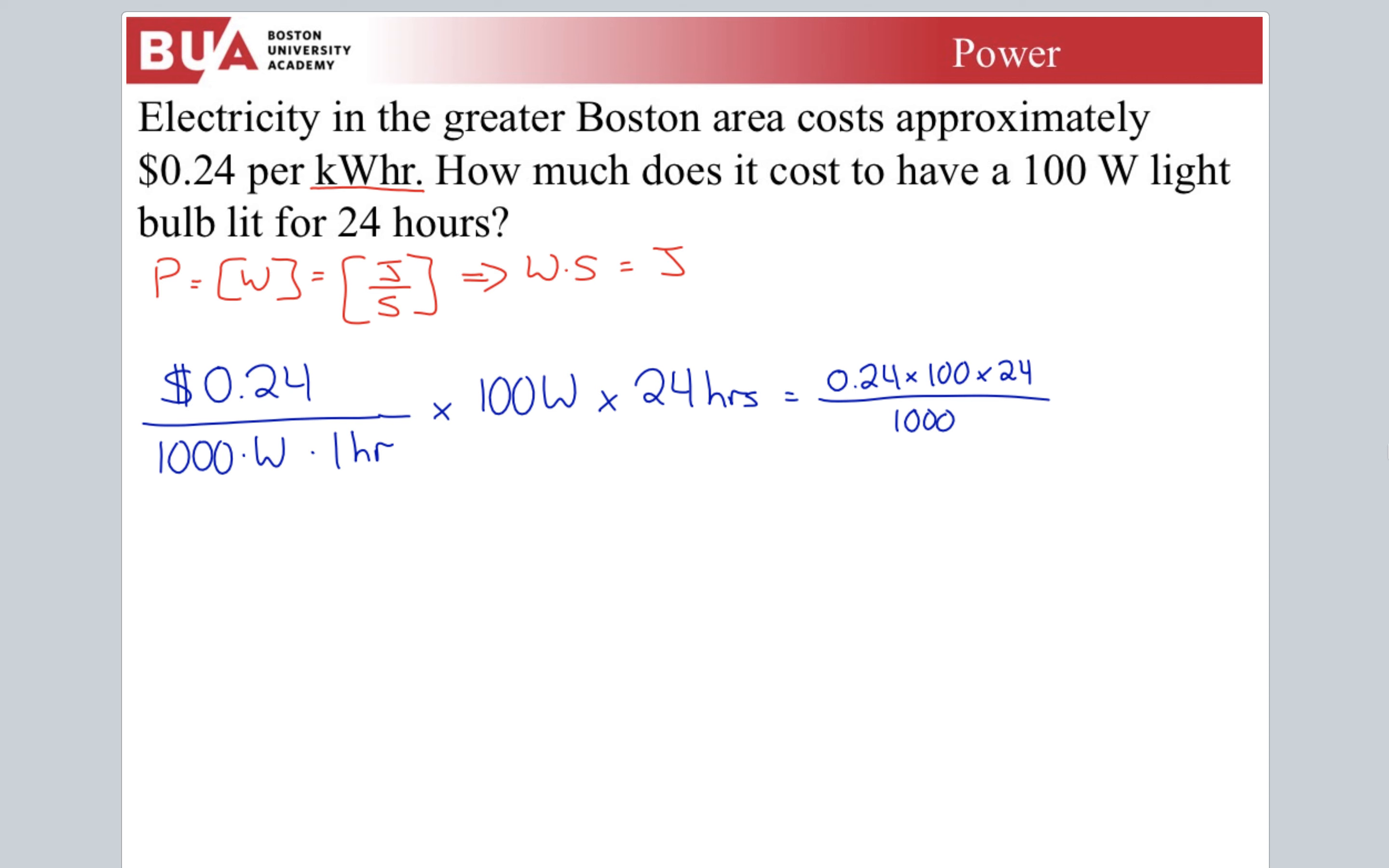I really get 0.24 times 100 times 24 over 1,000. We cancel watts, cancel hours. What I get in my house, your house might be different, you might pay different for power. I pay about 58 cents to have a hundred watt light bulb lit for 24 hours. In my house we actually use much more efficient lights. A hundred watt light bulb is an incredibly inefficient, bad thing. So my point here is if your parents yell at you for wasting energy, turn off the lights. You can tell them it's not that expensive. Don't worry about it. Give them 50 cents.